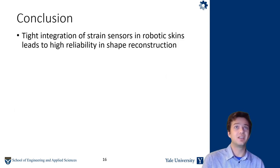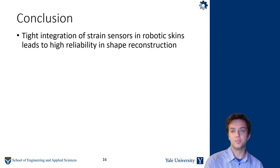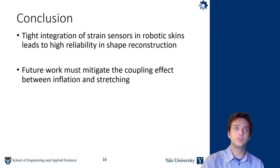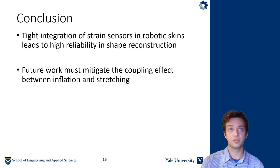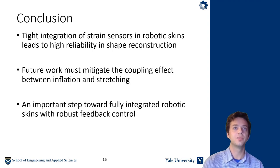So in conclusion, this tight integration of strain sensors and robotic skins has led to high reliability in shape reconstruction, which we demonstrated. For future work, we actually have to mitigate a coupling effect that happens between the inflation and the stretching of the sensors. So when we inflate the pneumatic actuators in our robotic skins, the sensors will respond differently because they both respond to the inflation pressure depending on sensor placement and manufacturing differences between skins. And so right now they can actually be used to reconstruct the shape for actuated skins only when the skins are stretched by hand or in this pegboard experiment. But this is an important step toward the fully integrated robotic skins with robust feedback control that we envision for the future.